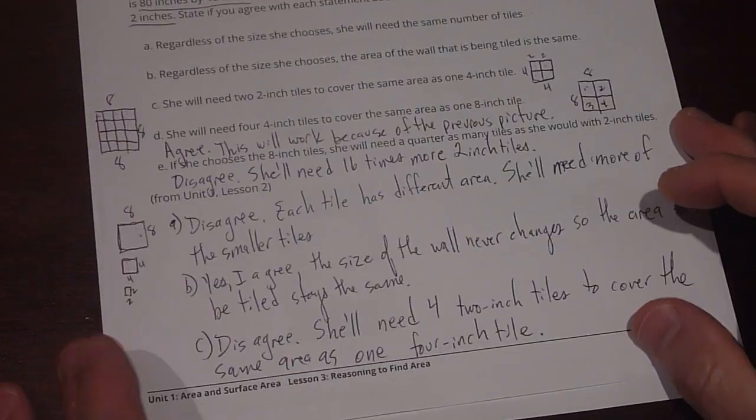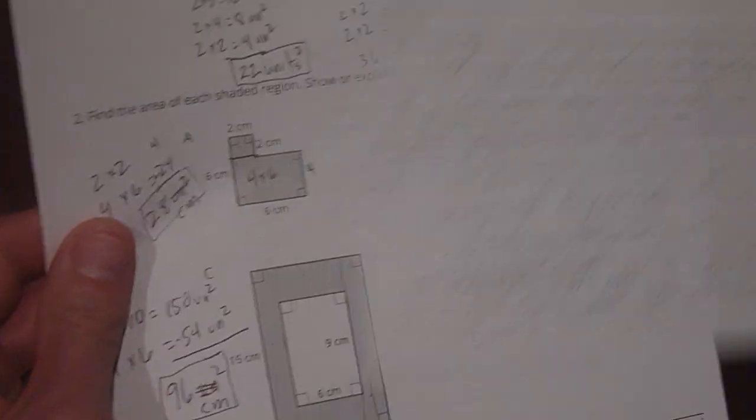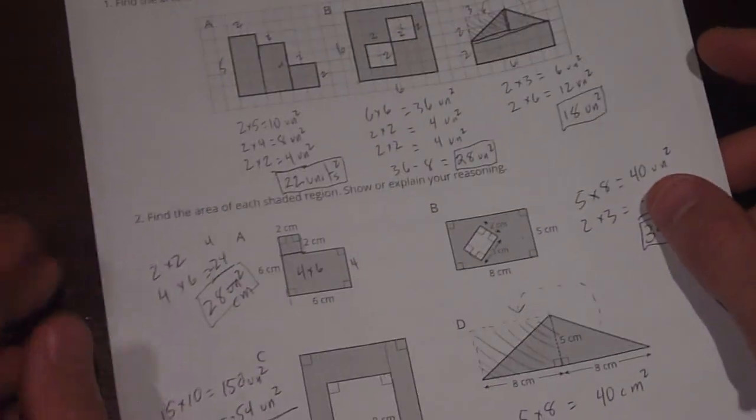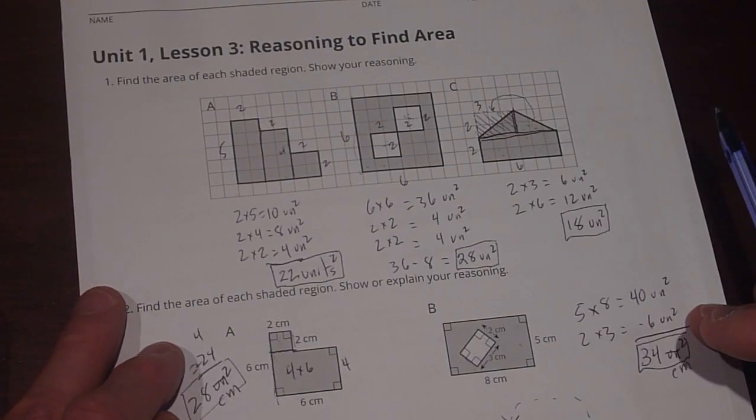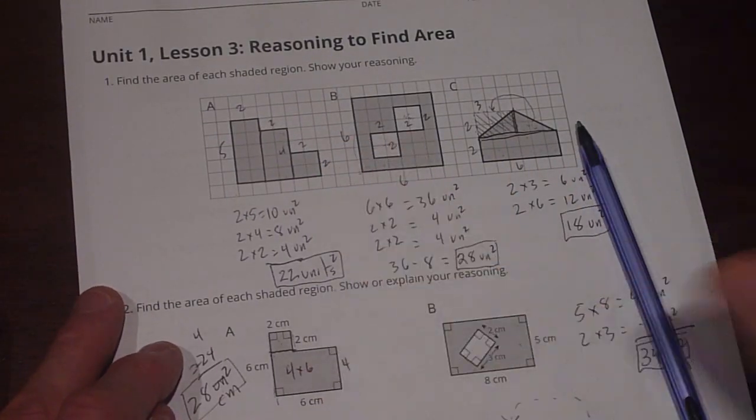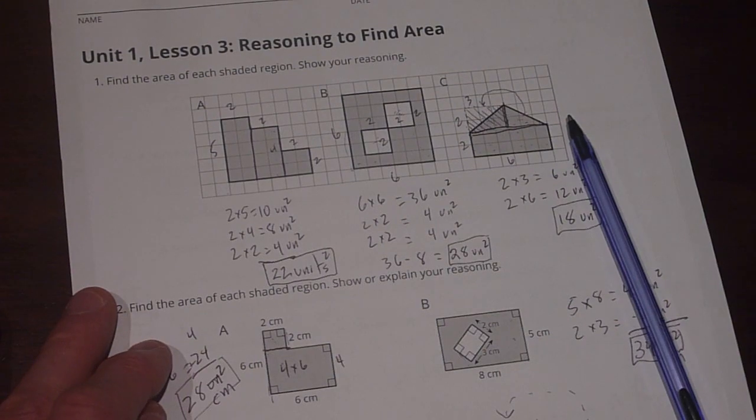Okay. There you go. I hope that was helpful. Again, that was Open Up Resources, Grade 6 mathematics, Unit 1 lesson 3, Reasoning to find area, the answers to the practice problems. Alright. Have fun. Keep learning. Keep making mistakes.